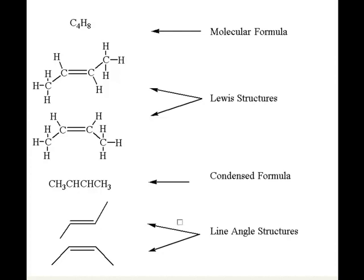And the line-angle structures for the trans, this first one, and for the cis would be the one below. I encourage you to map out all the carbons and the hydrogens in the line-angle diagram and compare them against the Lewis structure.